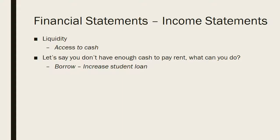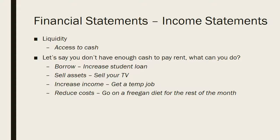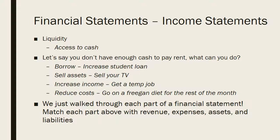Well, you could borrow money — maybe if you have a student loan, you could increase that student loan and borrow the money. You could sell assets: sell your TV and have enough money to pay your rent. You could increase income by getting a temp job. Potentially, you could also reduce your costs — go on a friggin diet for the rest of the month. For those not in the know, a friggin diet is when you only eat food that is free. It's apparently popular with college students. We could walk through each one of these situations using our financial statements — our balance sheet and income statement. If we borrow on a student loan, we increase our liabilities, increase our assets (cash), and then decrease that cash as an expense for rent.